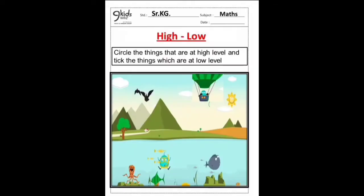Now, it is worksheet time. This is the first worksheet. Look at the picture carefully. What can you see in the sky at high level? Yes, you can see the birds flying, a hot air balloon and the sun. And at low level, you can see octopus and fishes are swimming in water. So in this worksheet, you have to circle the things that are at high level and tick the things which are at low level.